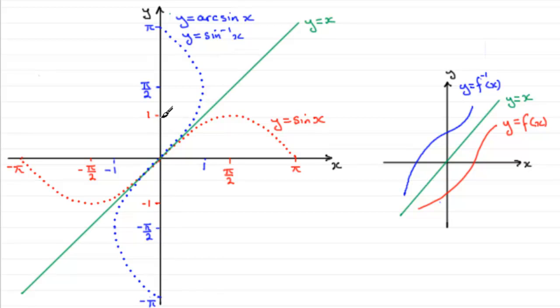We had that for the range of y equals sine x, it went from minus 1 to 1. But that now becomes the domain for y equals the inverse sine of x, going from minus 1 to 1, because 1 reflected over to here to 1, and minus 1 here reflected to the minus 1 here.